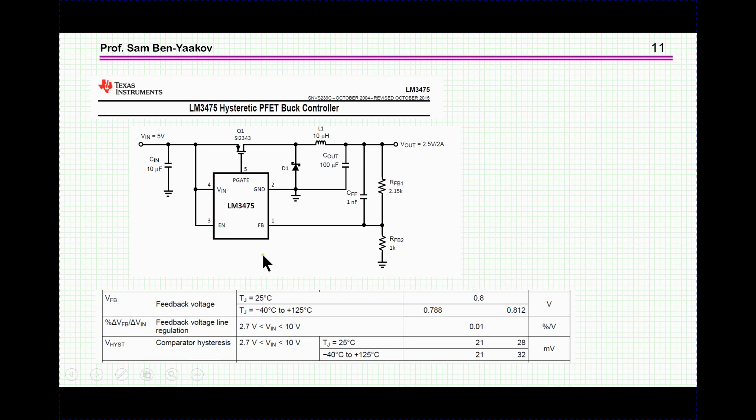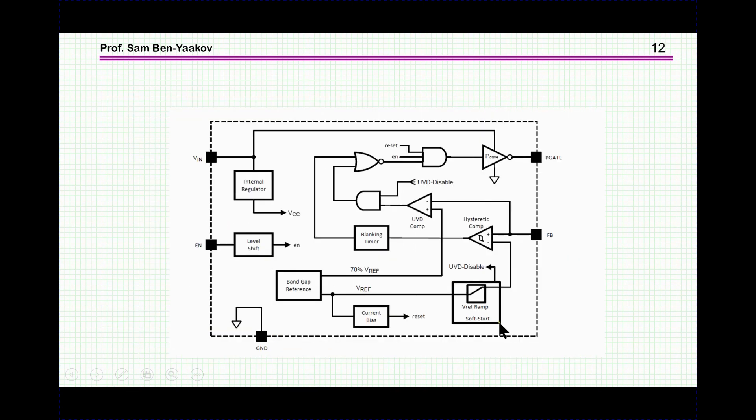And here it is, the block diagram. We have the hysteretic comparator. This is the feedback coming here, here is the reference, and there is a ramp for soft start. At the beginning it'll go up slowly so as to get a soft start, and then it goes to a driver that goes to the gate. There's an internal regulator, etc. But basically it's what we've seen before.